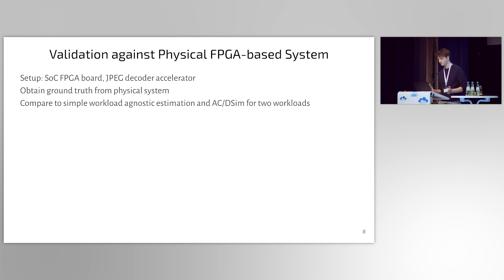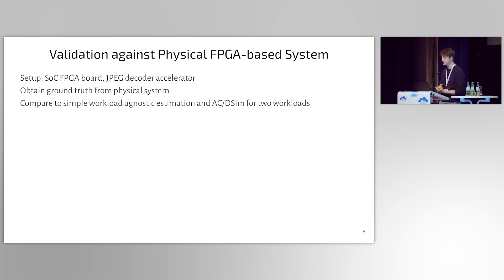Now that we discussed the approach, I wanted to validate whether it actually works. For this, I used an SoC FPGA board to physically prototype the system shown on the previous slide. The SoC contains a CPU on which I run the operating system as well as the application for the workload. During this experiment, I measured the energy consumption of purely the FPGA to obtain the ground truth, and I then compare this with a simple workload-agnostic estimation using Vivado as well as what I get from ACDSim. I'd like to stress that even though I can simply measure the physical system here, ultimately ACDSim targets systems where you don't have that.